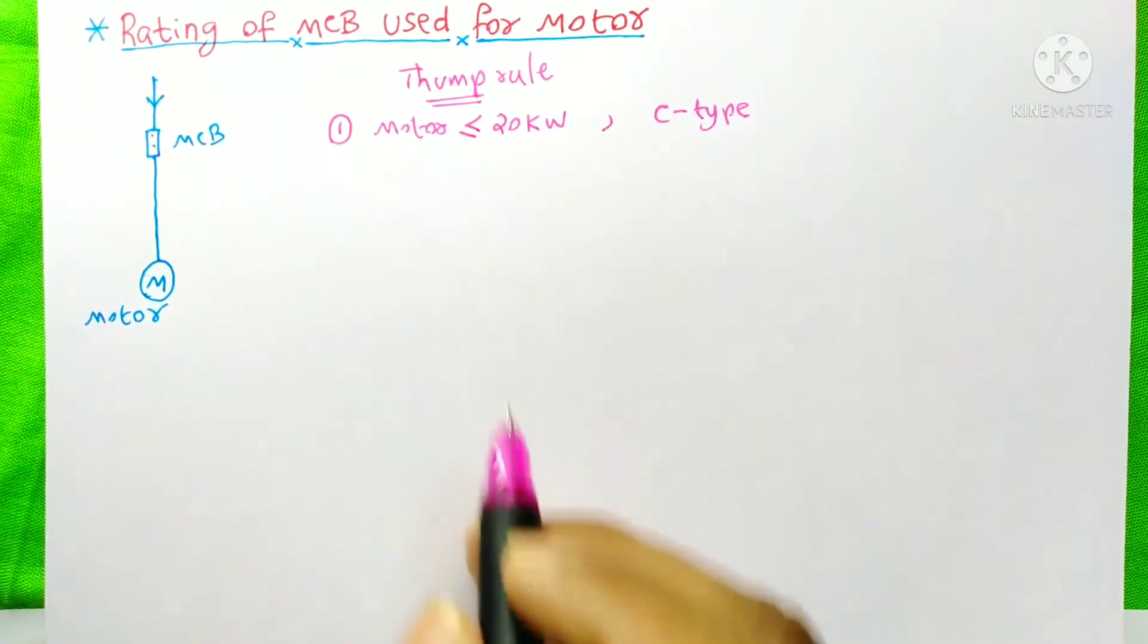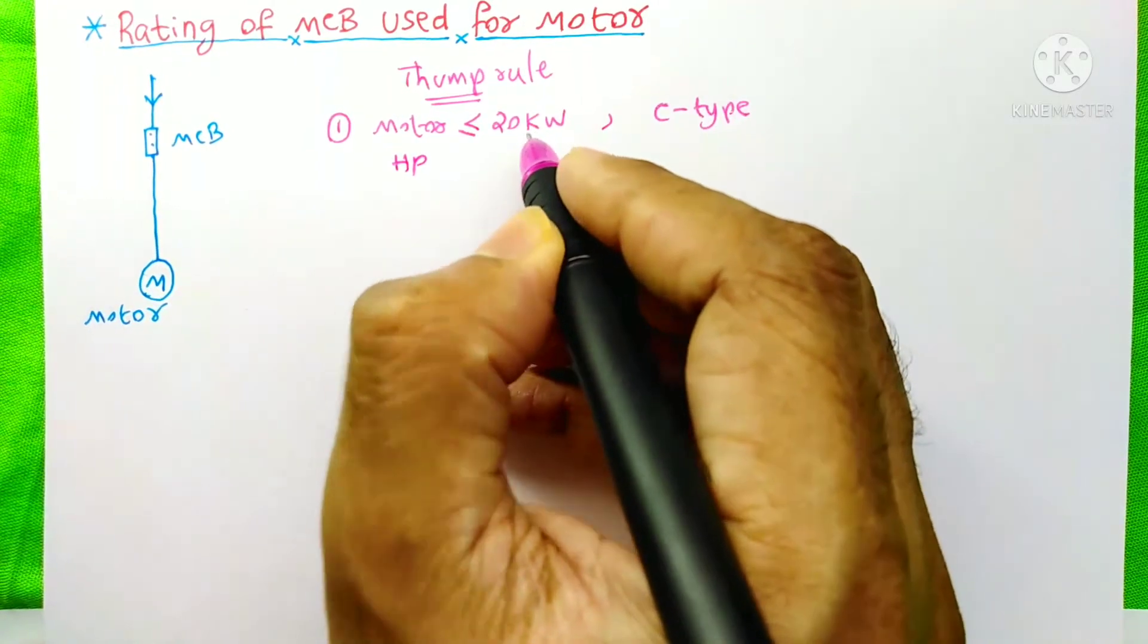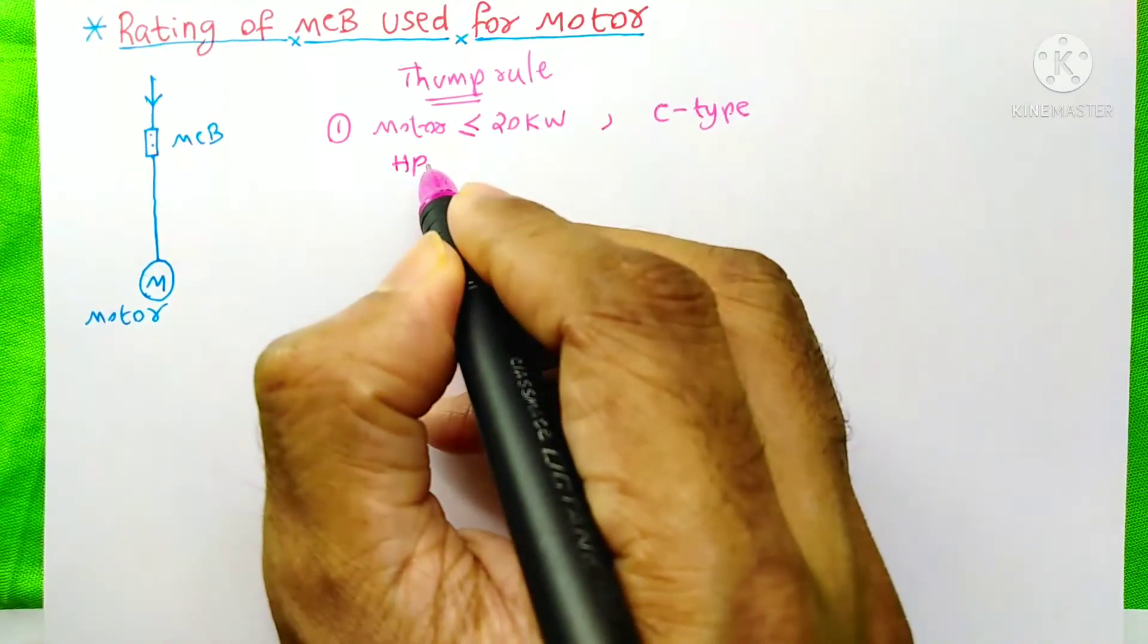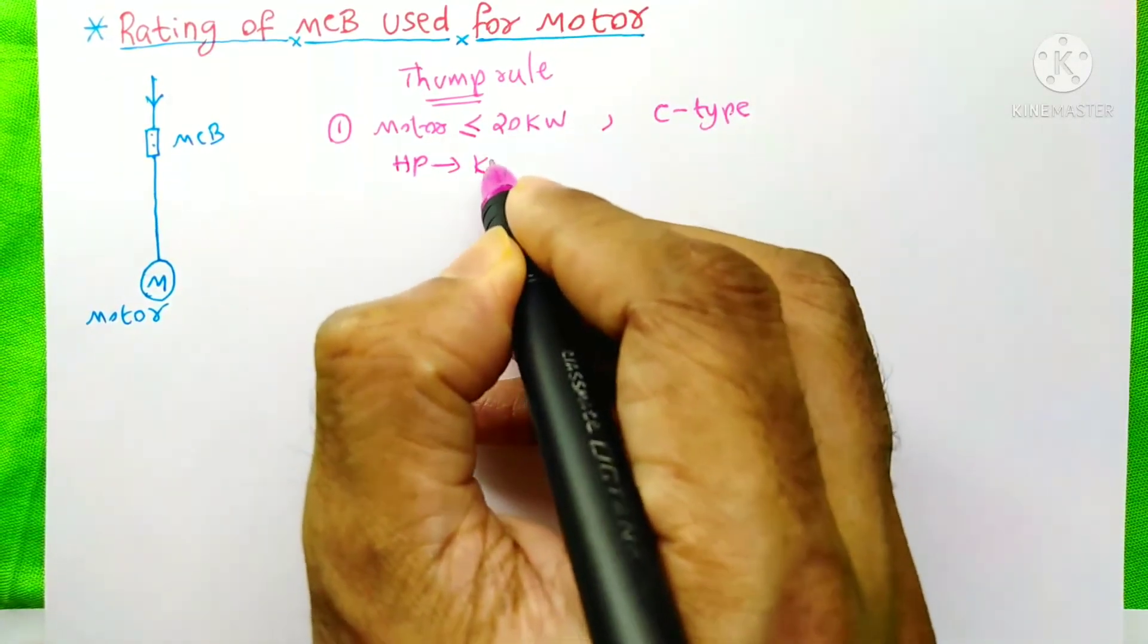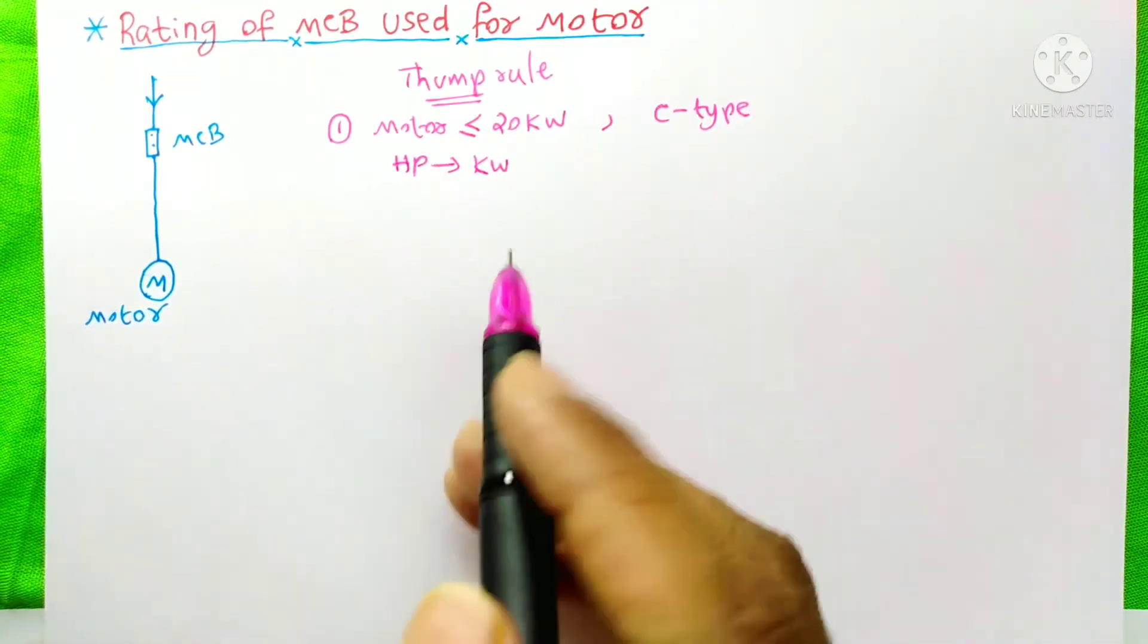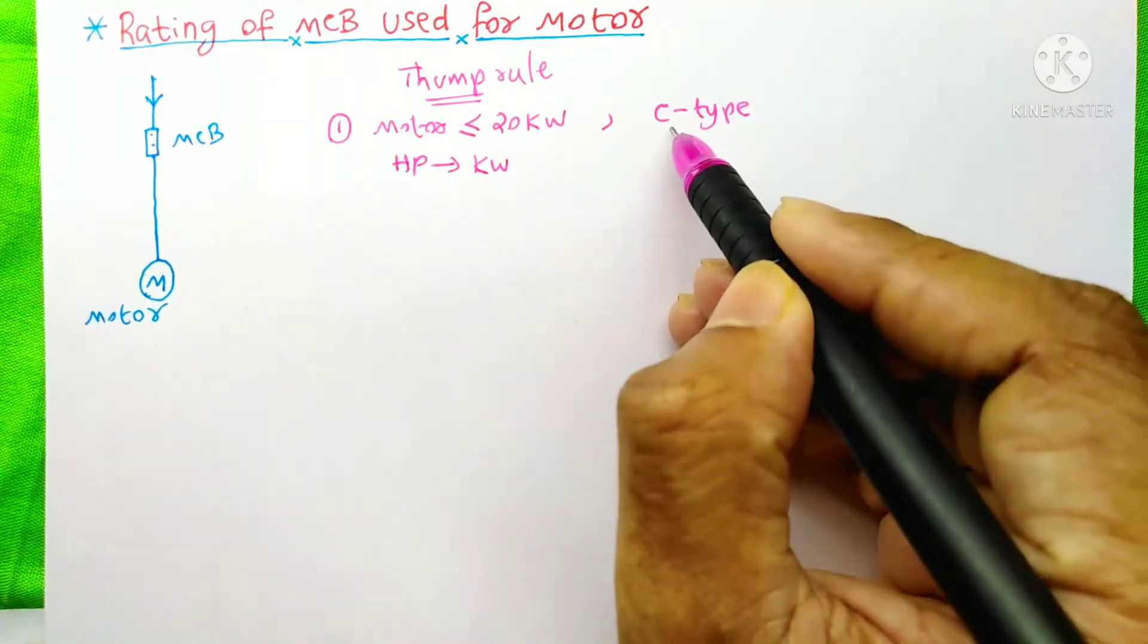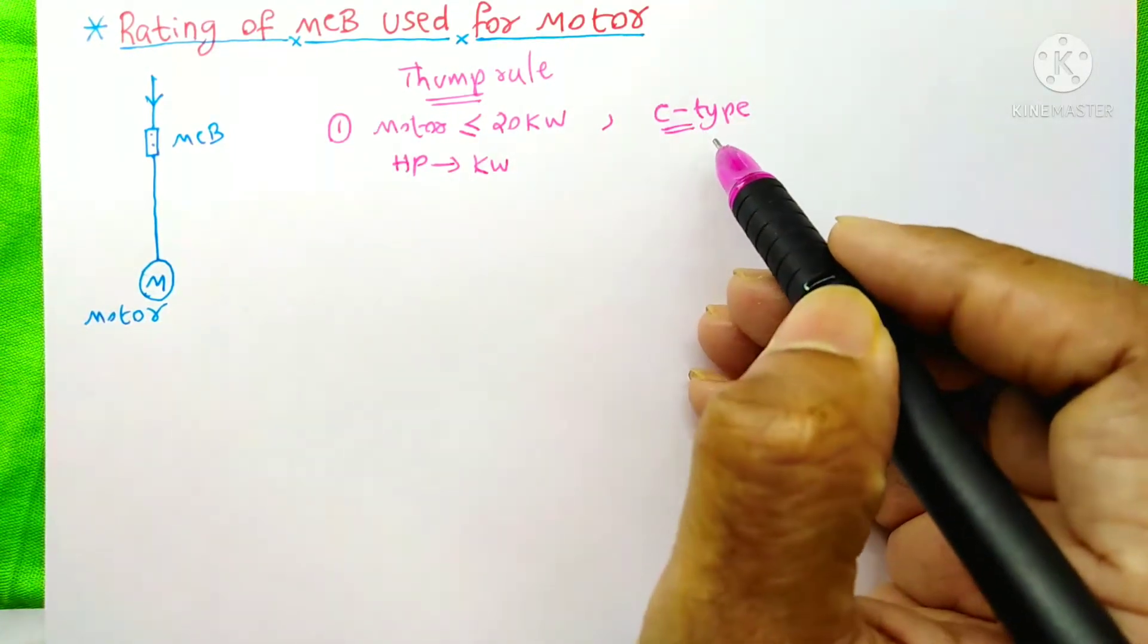We know that most of the motors are rated in HP, not in kW. So first you need to convert this HP to kW and if this kW is less than or equal to 20kW, then you need to select the C-type MCB for your purpose.